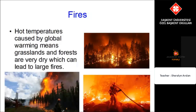Hot temperatures caused by global warming means grasslands and forests are very dry, which can lead to large fires. This is very bad for the environment and many animals lose their habitat.